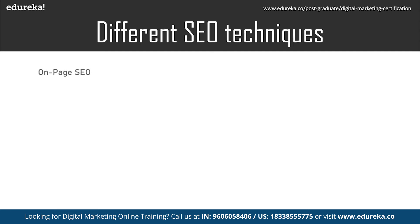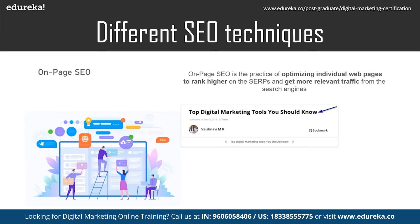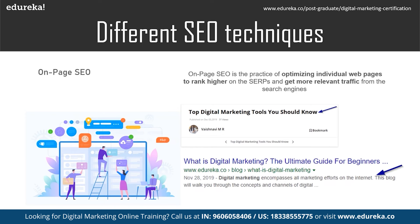On-page SEO is the practice of optimizing individual web pages to rank higher on the search engine result pages and get more relevant traffic from search engines. As the name suggests, it optimizes the content present on the page — such as title tags, meta tags, meta description, keyword density, URL of the page, and so on. As long as you focus on giving more attention to your content and the way it is presented to your viewer, you're in safe hands.